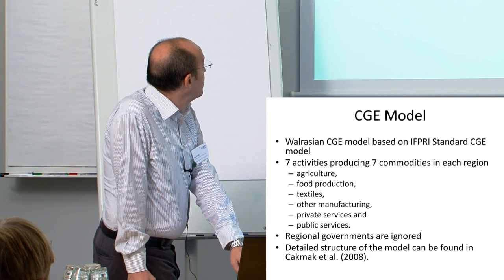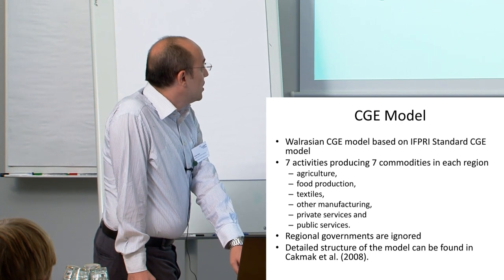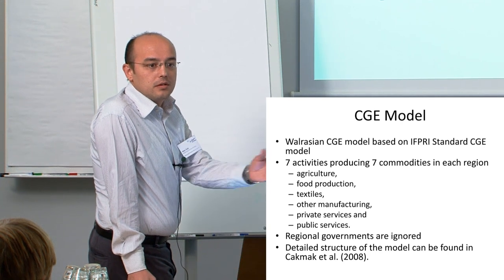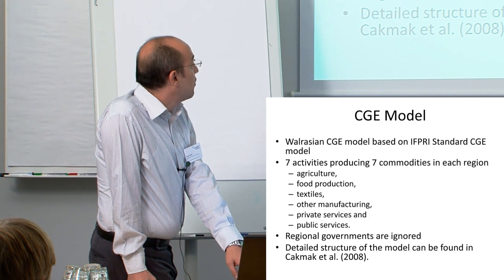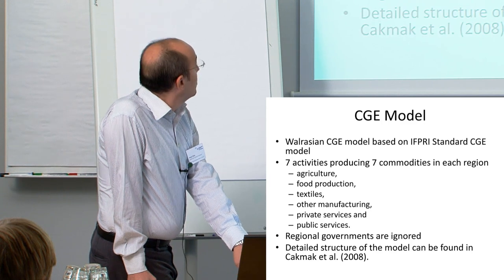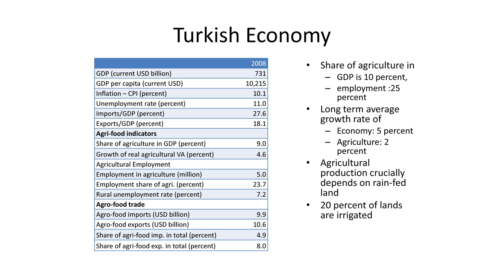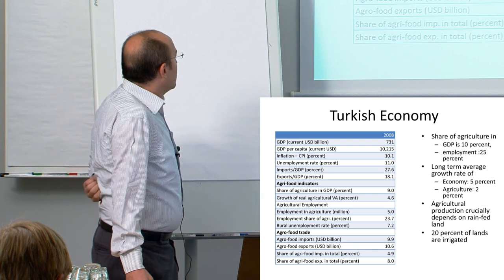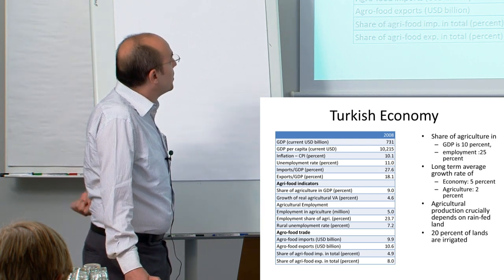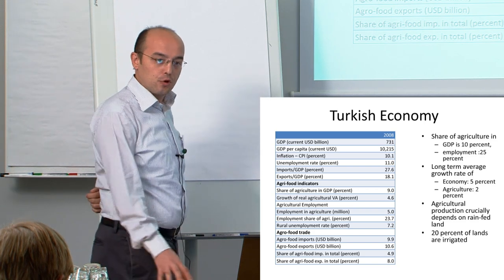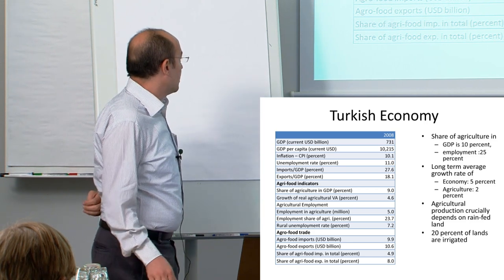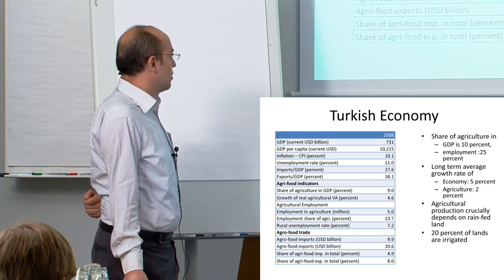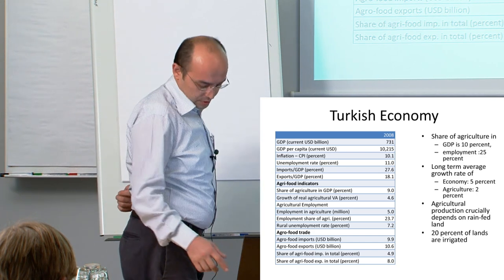We have seven activities producing seven commodities in each region. We ignore regional governments—all business done by national government. This is a Walrasian CGE model based on IFPRI standard model. These numbers summarize Turkish economy in 2008. We have an 11% unemployment rate. Share of agriculture in GDP is 9%, not very big, but 23% of people are employed in agriculture. The main link to the economy is through employment.